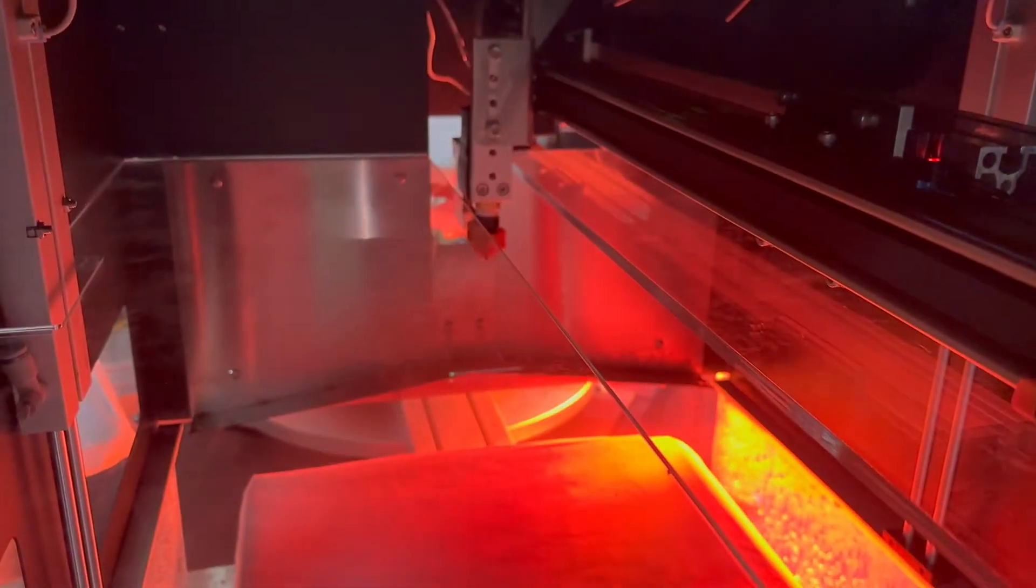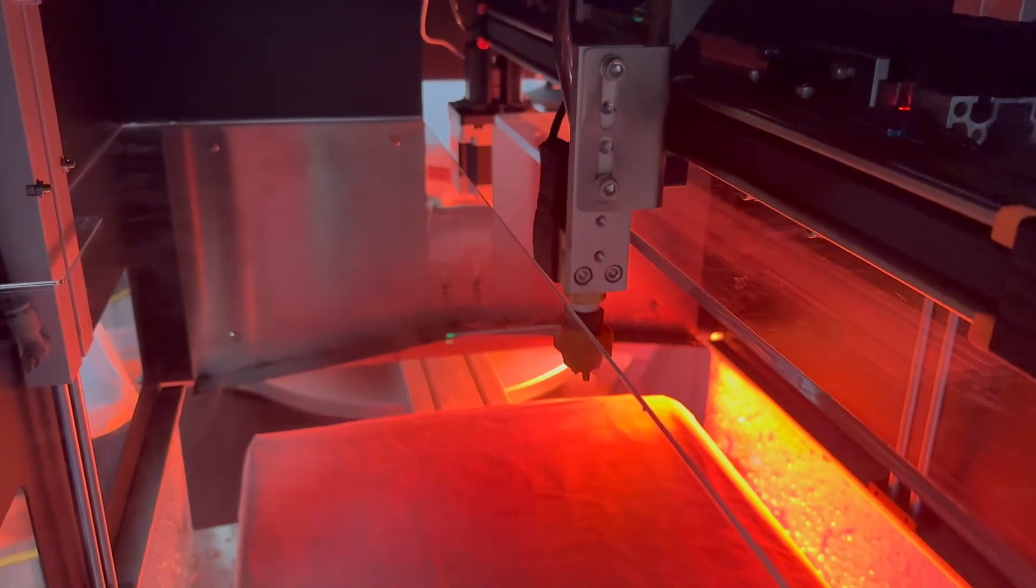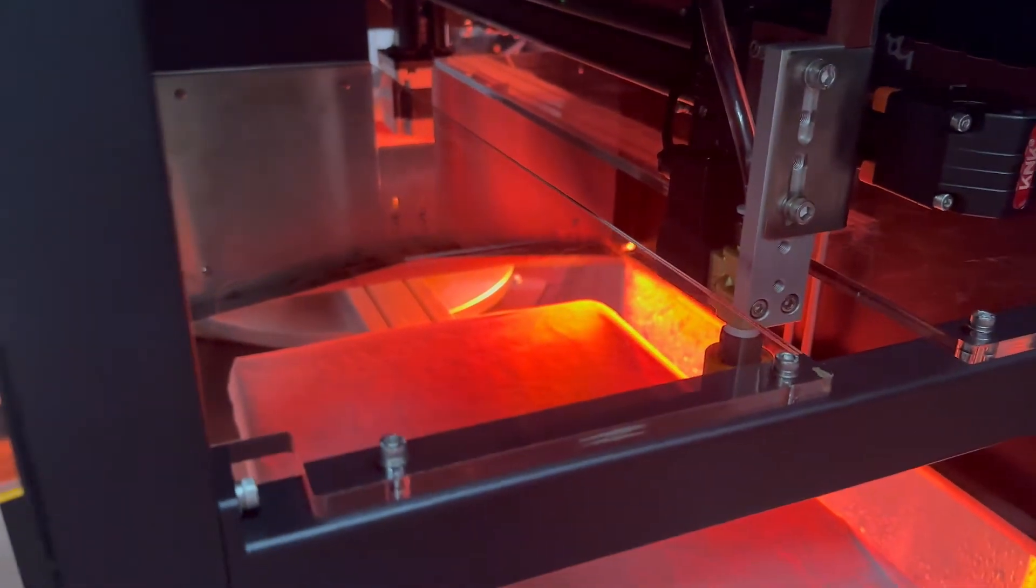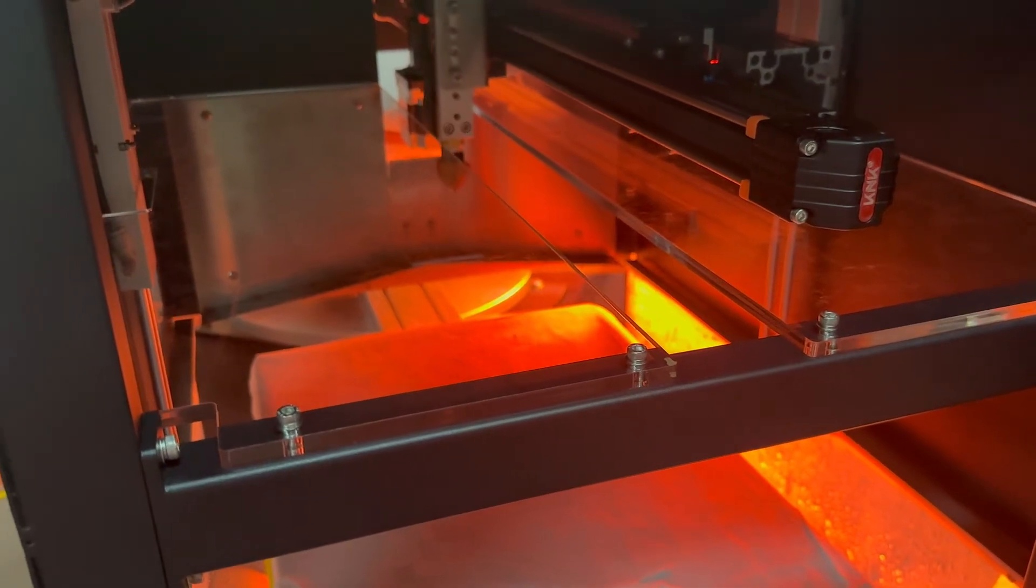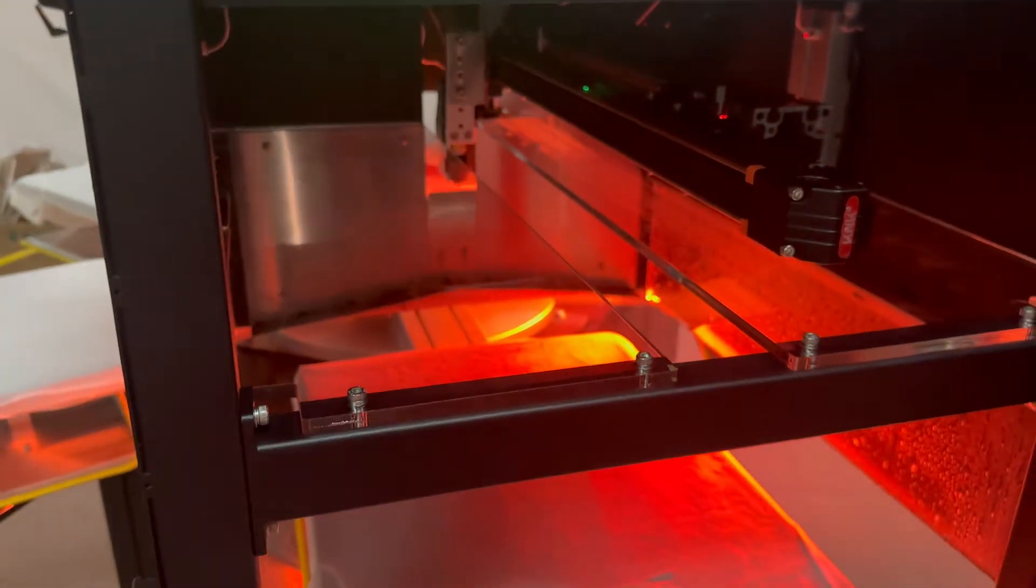If you only need to use one of the functions, you only need to disable the other two functions. For example, if you only need to use the spray function, you can disable the drying and hot pressing functions.